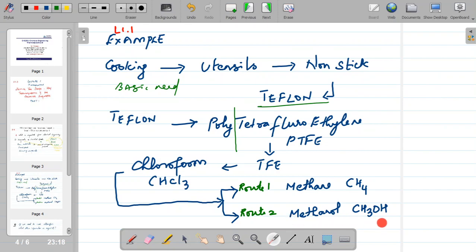The second route to make the same chloroform is a methanol route, where methanol on reaction with hydrogen chloride can form methyl chloride. And this methyl chloride again goes through chlorination to form dichloromethane and then trichloromethane which is chloroform and then tetrachloromethane. So if we need this end product, these utensils which are nonstick which has a Teflon coating, suppose this is my end product, this is my consumer item or finished good.